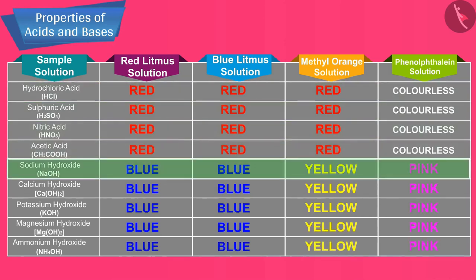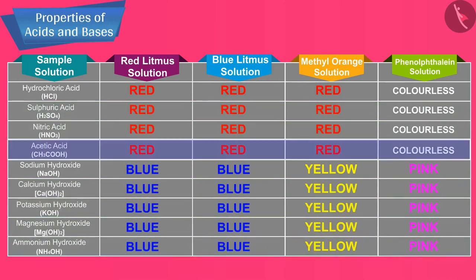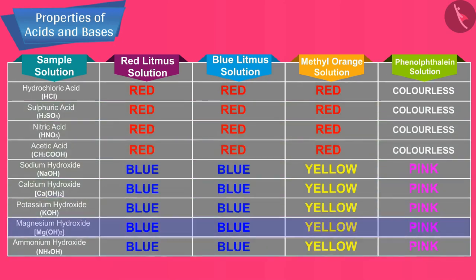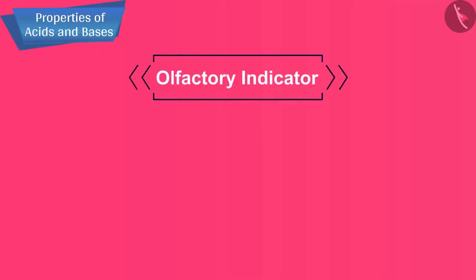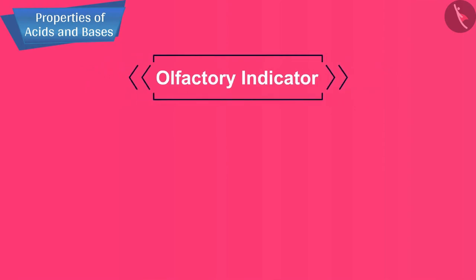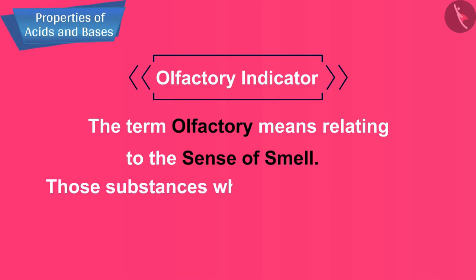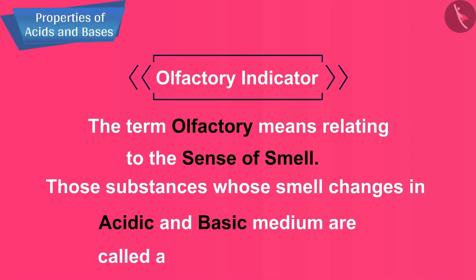These indicators tell us whether a substance is acidic or basic by a change in colour, as shown in the table. There is one more type of indicator called olfactory indicator. The term olfactory means relating to the sense of smell. Substances whose smell changes in acidic and basic medium are called olfactory indicators.